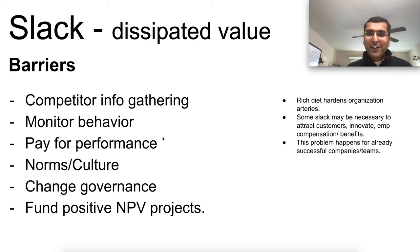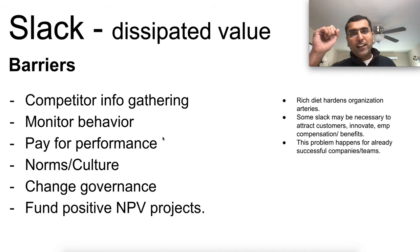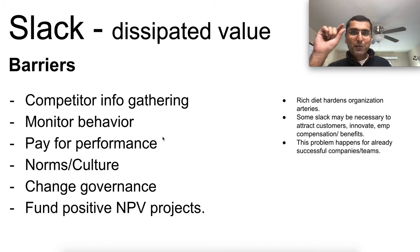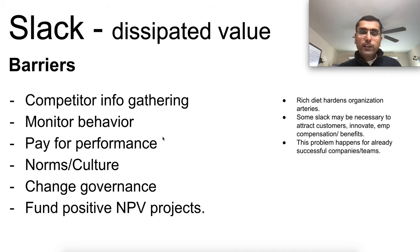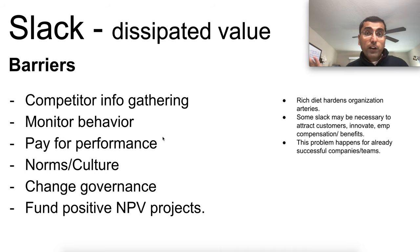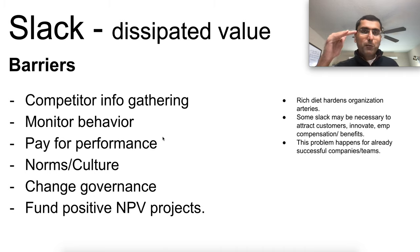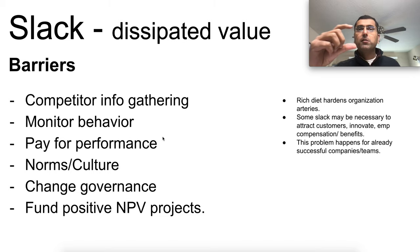Slack happens when successful teams just need more and more. As the book says: 'Rich diets harden organization arteries.' Once teams and companies are highly successful, slack gets built in — dissipated value like lethargy and inertia. To monitor and improve this: gather competitive intelligence, check how many people you're spending versus your competitor, and monitor for the right things. Remember, you don't want extreme monitoring that kills culture — but some level of monitoring is necessary to identify problems and enable action.